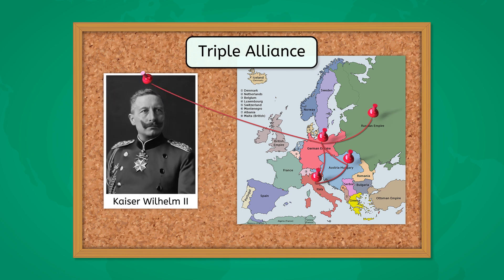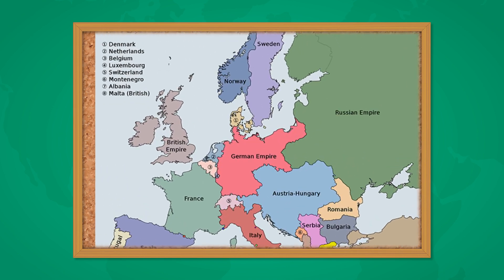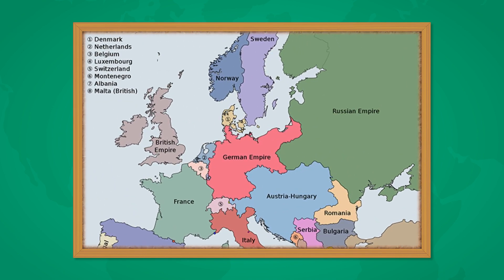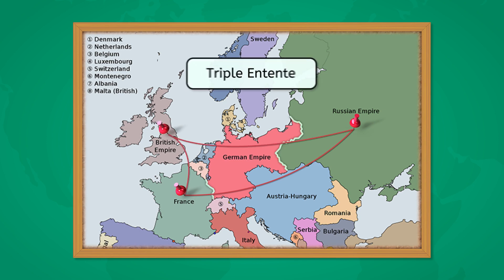However, when the new ruler of Germany, Kaiser Wilhelm II, came to power, he forced Bismarck to resign and chose not to renew the treaty with Russia. Kaiser Wilhelm II was a nationalist leader who saw war as an opportunity for German expansionism. This led Russia to form a military alliance with France. Germany was now in a difficult position, potentially having to fight a two-front war with France and Russia. To make matters worse, Britain, France, and Russia formed the Triple Entente out of fear of Germany's growing navy.